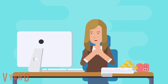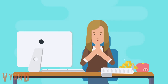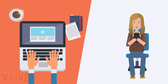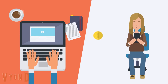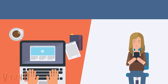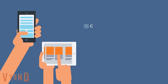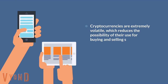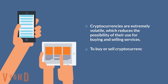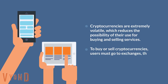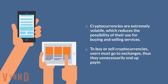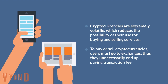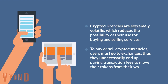However, blockchain and cryptocurrencies have their drawbacks. Blockchain transactions are slow and therefore unrealistic for use cases that require a large volume of transactions. Cryptocurrencies are extremely volatile, which reduces the possibility of their use for buying and selling services. To buy or sell cryptocurrencies, users must go to exchanges, unnecessarily paying transaction fees to move their tokens from their wallet to exchanges.